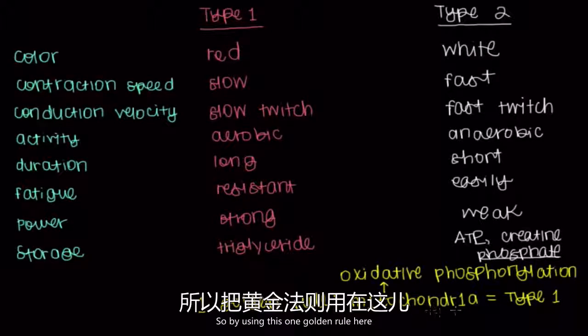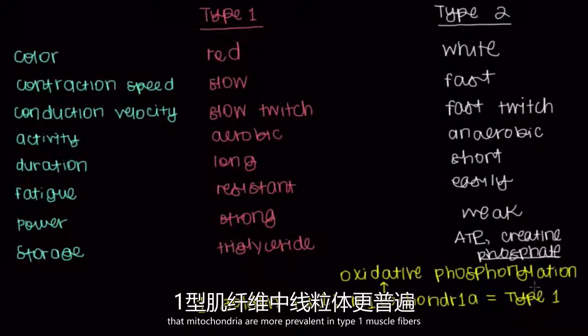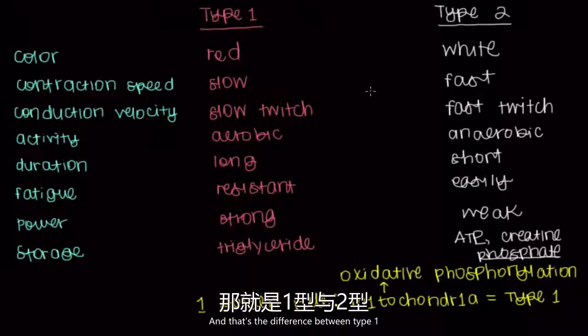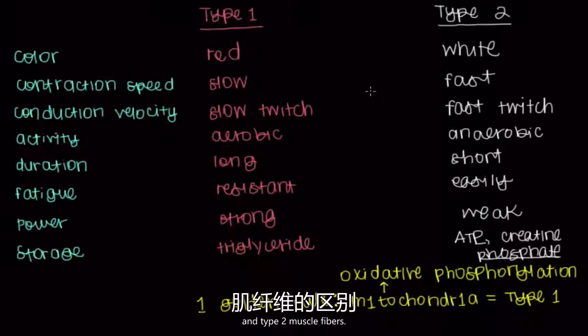By using this one golden rule — that mitochondria are more prevalent in type 1 muscle fibers — we can figure out the whole table. And that's the difference between type 1 and type 2 muscle fibers.